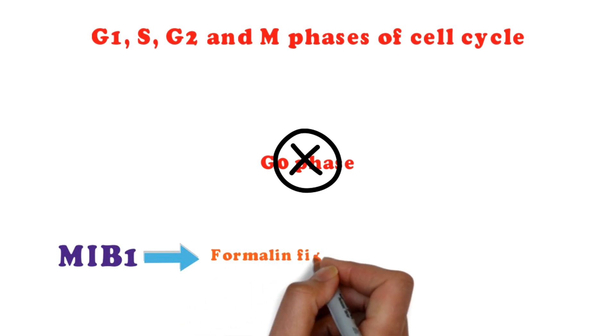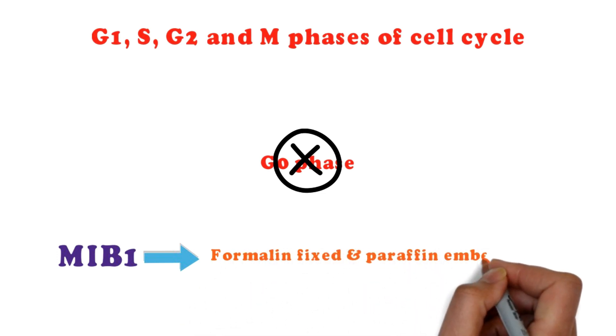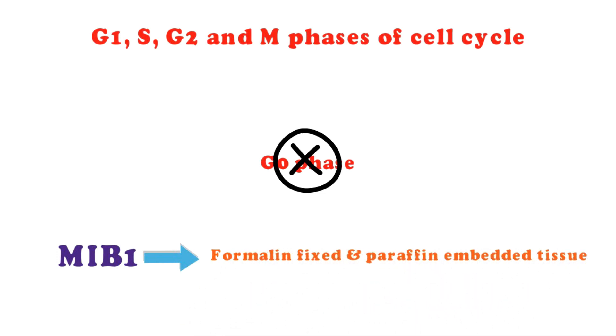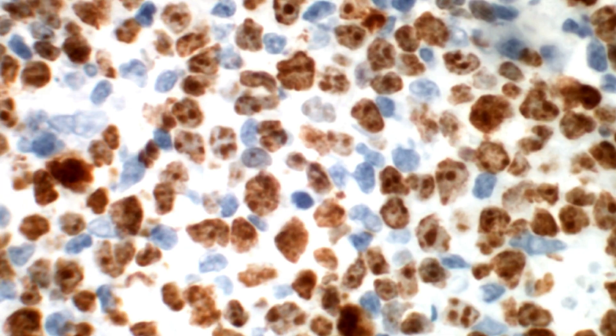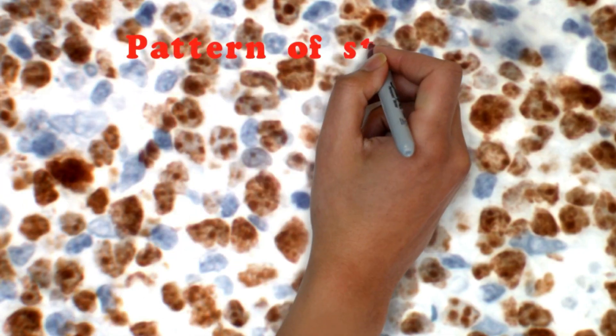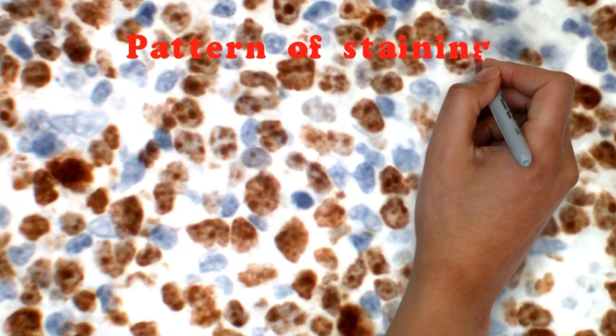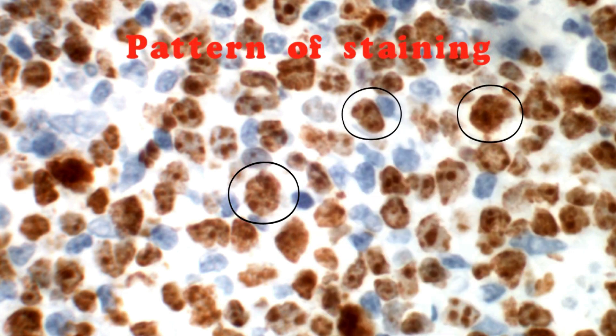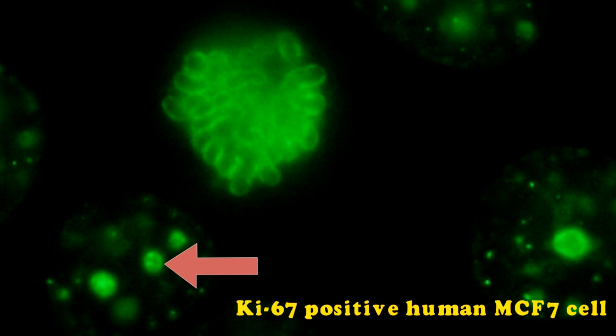Now let's talk about the pattern of staining. The characteristic staining pattern of ki-67 is that it stains the nucleus specifically. During interphase, the ki-67 antigen can be exclusively detected within the nucleus, whereas in mitosis most of the protein is relocated to the surface of chromosomes.